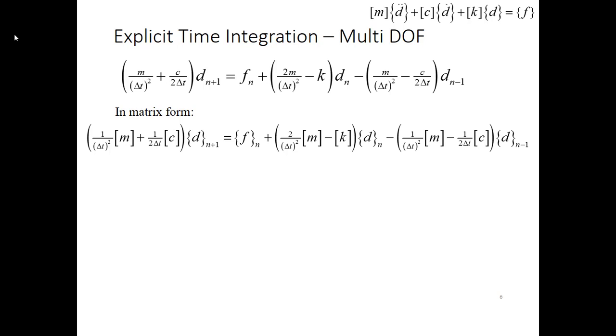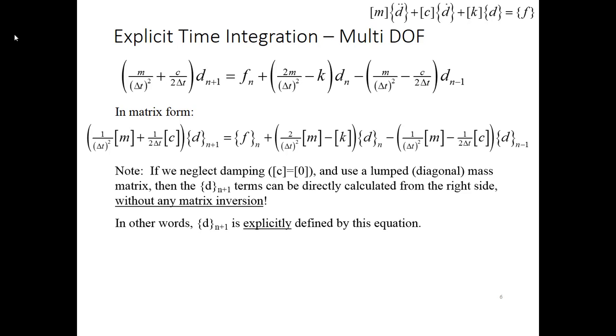So we can take this and make it a multiple degree of freedom system by converting M, C, and K over to their matrix forms and then making vectors out of the F and the N terms. Now that gives us our recursion formula. So again, if you used a lumped mass, then M becomes diagonal, and if we neglect damping, which is appropriate for short duration events, then C is 0, so there's no matrix inversion, so D n plus 1 is explicitly defined. That's how this gets its term, explicit time integration.